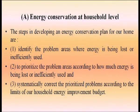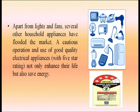The steps in developing an energy conservation plan for your home are: identify problem areas where energy is being lost or inefficiently used; prioritize those areas according to how much energy is being lost; and systematically correct the prioritized problems within your household energy improvement budget. Apart from lights and fans, several other household appliances have flooded the market. Using good quality electrical appliances with a 5-star rating not only enhances their life but also saves energy. Large appliances are the major consumers of energy, and improving their operating efficiency will significantly reduce overall electricity consumption.